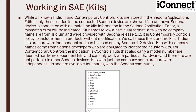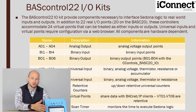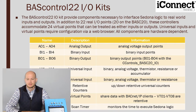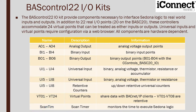Here's a little information about the kits. Contemporary Controls has their own folder which will allow you to connect to their controllers. The BAS Control 22 controller has an IO kit. You can see some of the different analog inputs and outputs, the binary inputs and outputs, the universal inputs, the virtual points, the web points, etc.